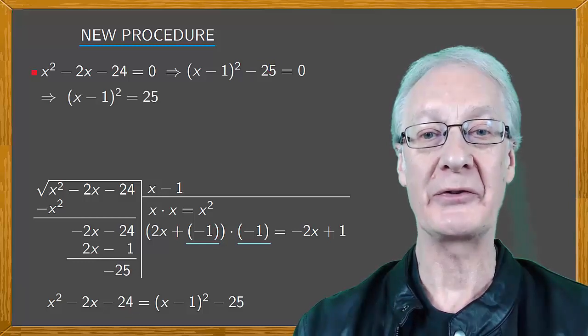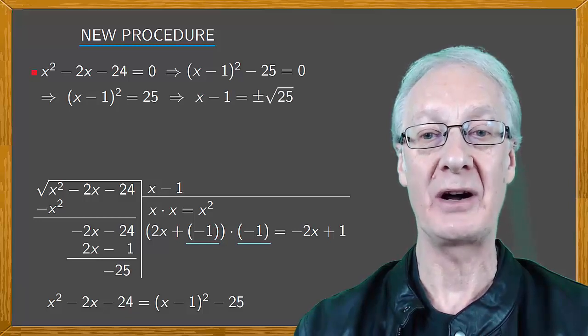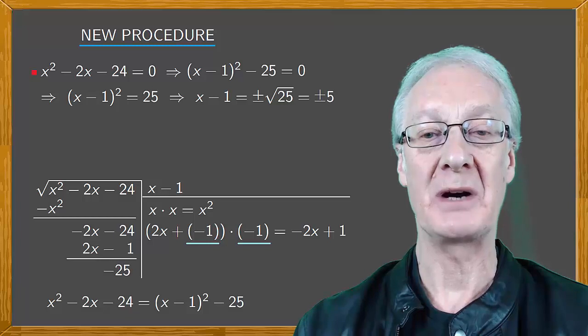Taking the square root of both sides, x minus 1 is plus or minus root 25, which is plus or minus 5.